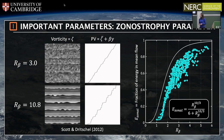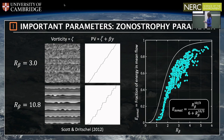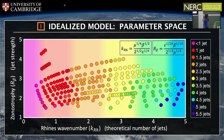Audience member: In practice, do you change zonostrophy by changing the ratio of dissipations at small scale versus large scale? Laura: You can change it by changing any one of the three parameters in the system — beta, epsilon, or mu.